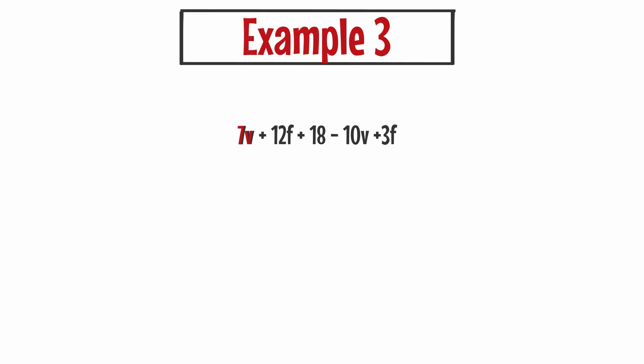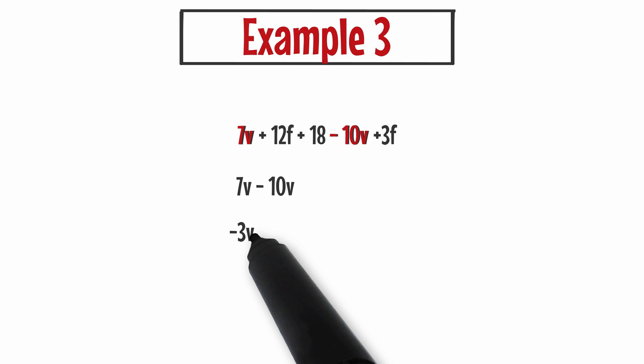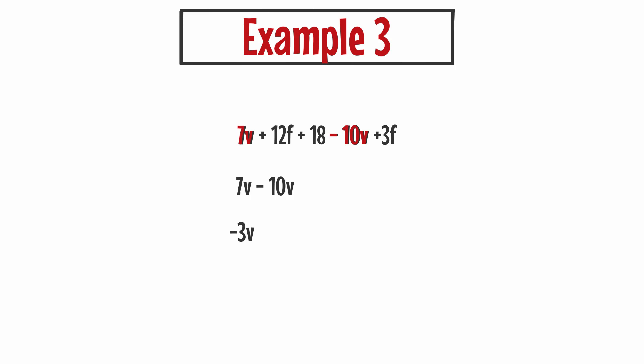I have seven violins, and then I don't see any violins for a little while. Later, I see a minus 10 violins. This is a little different — I'm subtracting here. I start off with a positive 7 violins, but this is really a smaller problem I have to work out in the middle of this larger problem. If I have 7 violins and I take away 10 violins, I then have negative 3 violins. I'm going to use the minus sign in front of the 10v as a negative 10v, so 7v minus 10v gives me negative 3v.